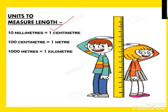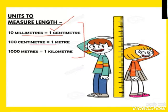When we talk about the standard units of length, they are millimeter, centimeter, and kilometer. One centimeter equals 10 millimeters, one meter equals 100 centimeters, and one kilometer equals 1000 meters. You will be needing these conversions when we have to convert the units — we will be discussing that later on.